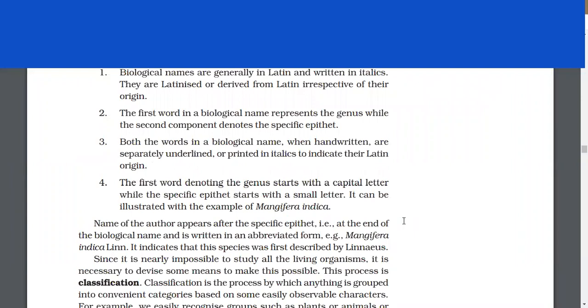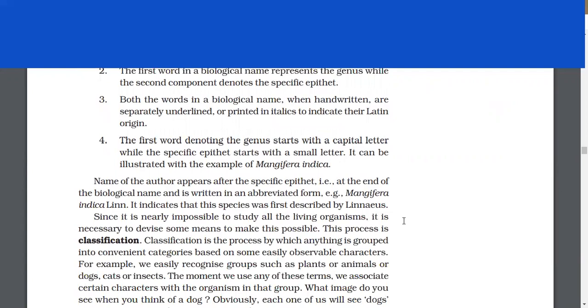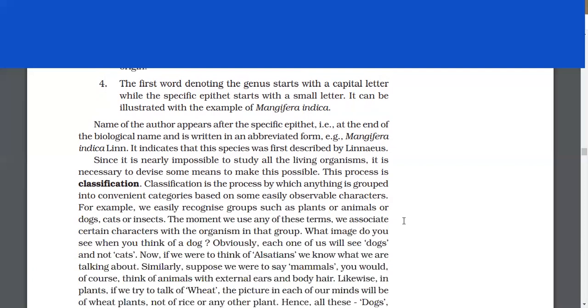Biological names are generally in Latin and written in italics. They are Latinized or derived from Latin. The first word represents the genus, while the second component denotes the specific epithet. Both words are separately underlined when handwritten or printed in italics. The first word starts with a capital letter, while the specific epithet starts with a small letter. The name of the author appears at the end in abbreviated form, for example, Mangifera indica Linn. This indicates that this species was first described by Linnaeus.